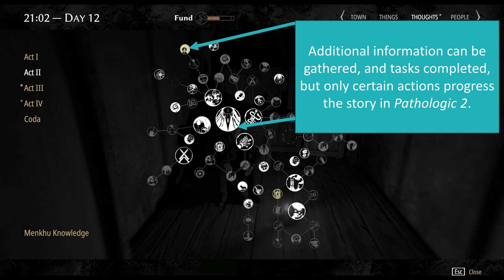So in the game Pathologic 2, there's lots of different things you can do, the game is divided up in different acts, that give you additional information, and you can complete different tasks, but only certain actions progress the story. And these are highlighted as bigger icons within the kind of mental map it provides to you.